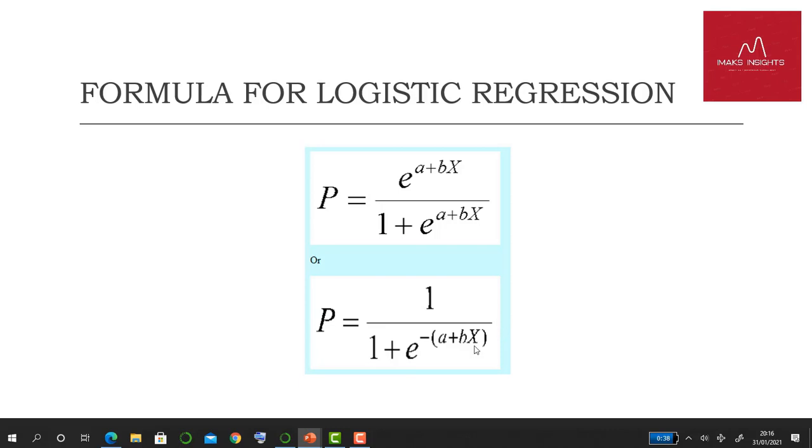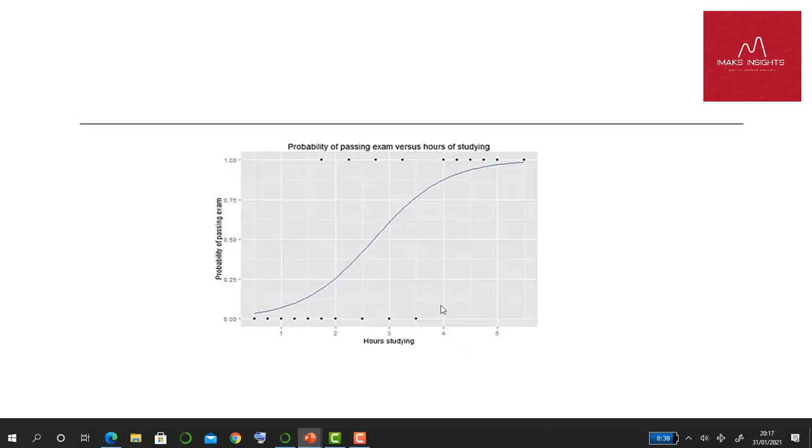This is the curve for logistic regression. If you plot the values given the dependent variables and given the independent variables, you can plot a curve that looks like this.